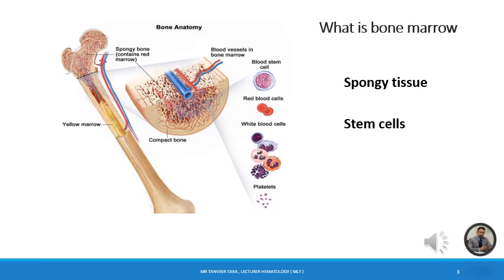Red blood cells carry oxygen through your body, while white blood cells fight against infections. White blood cells are of five types: granulocytes include eosinophil, basophil, and neutrophil, while agranulocytes are lymphocyte and monocyte. Platelets are not basically a cell but a shedding of cytoplasm, and they help with blood clotting.